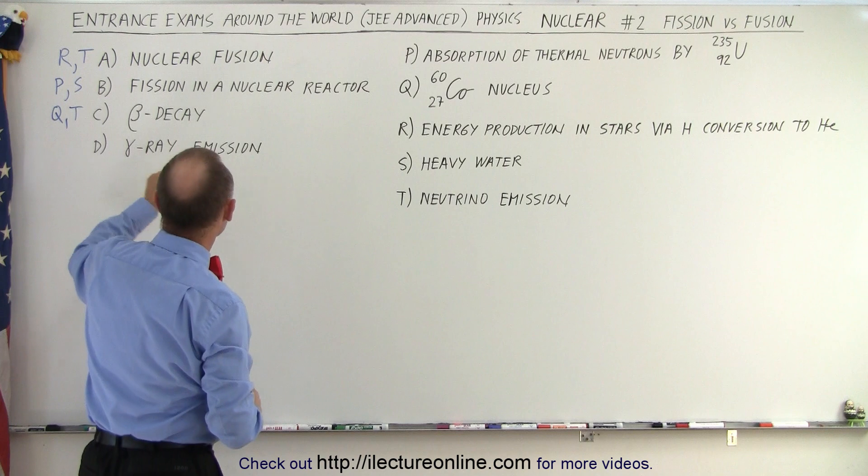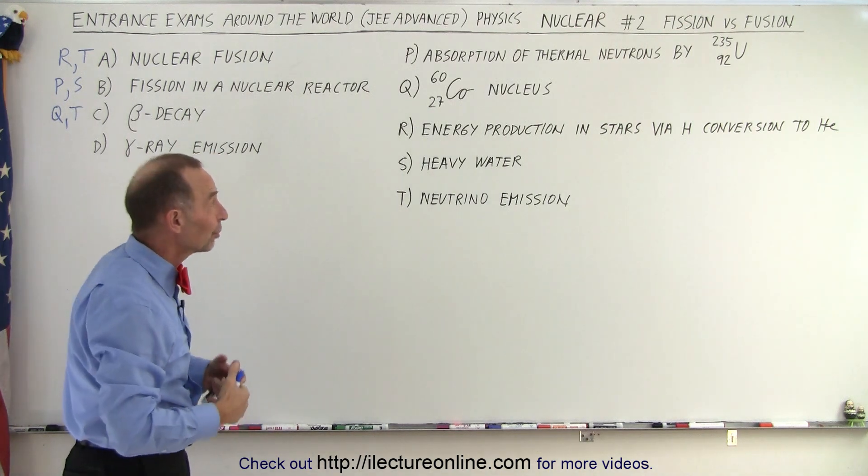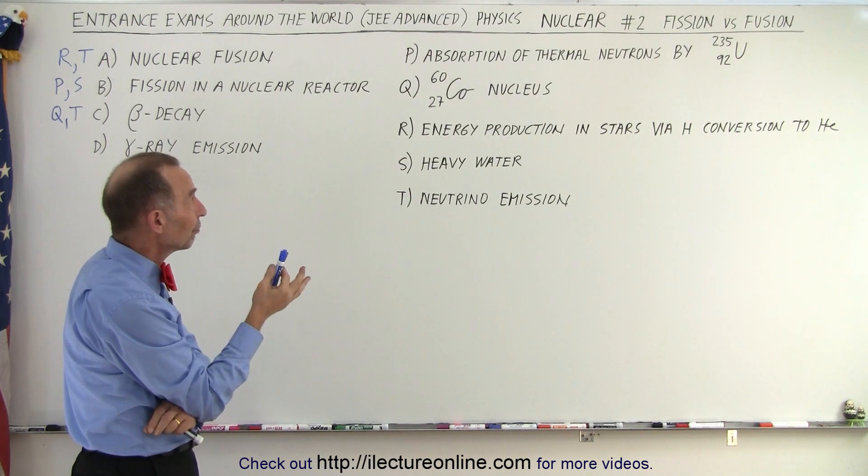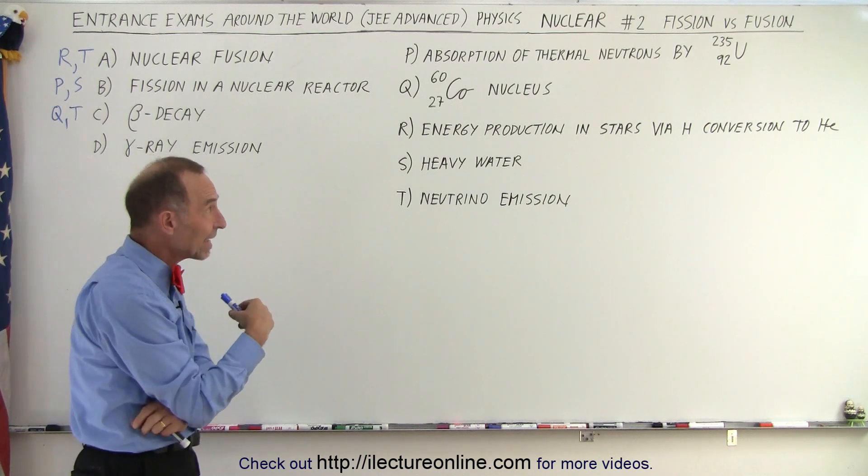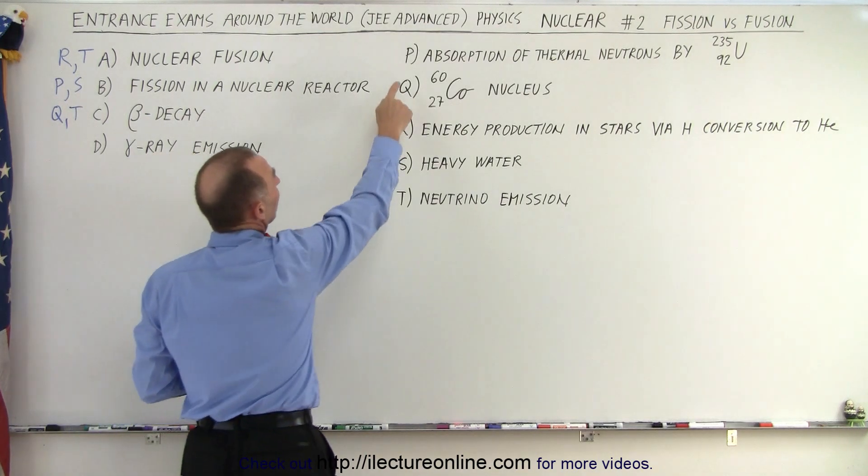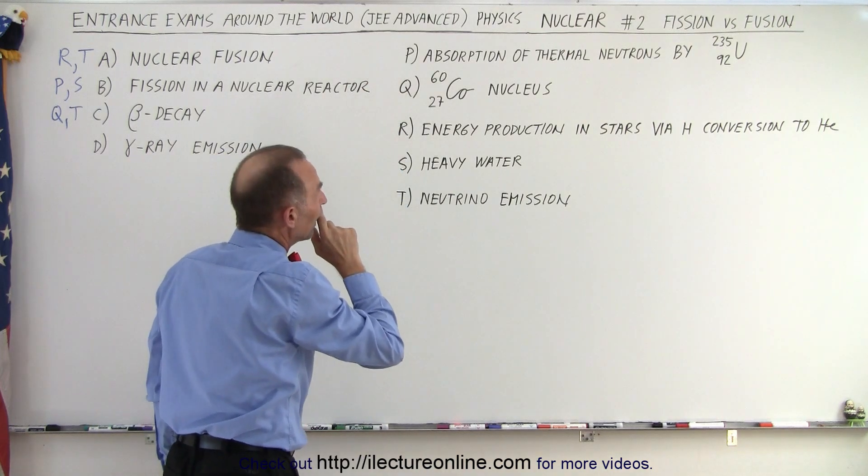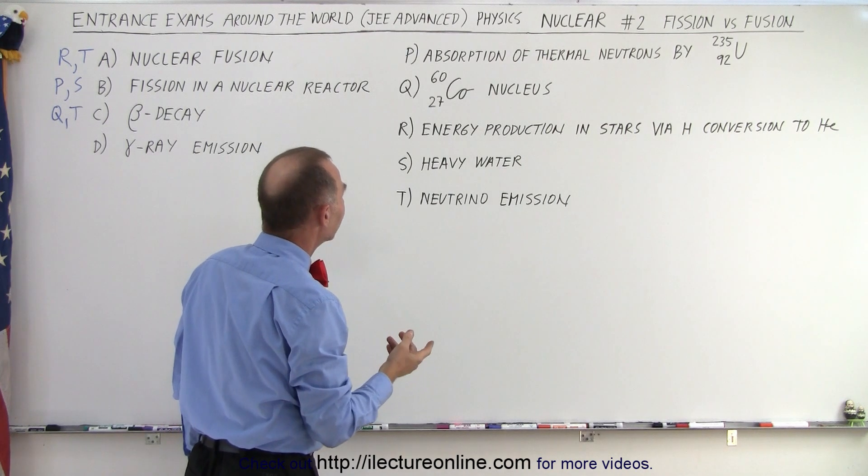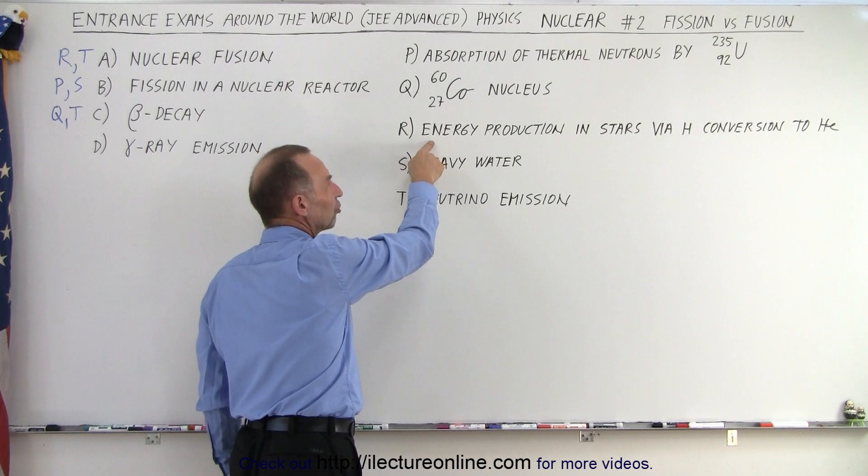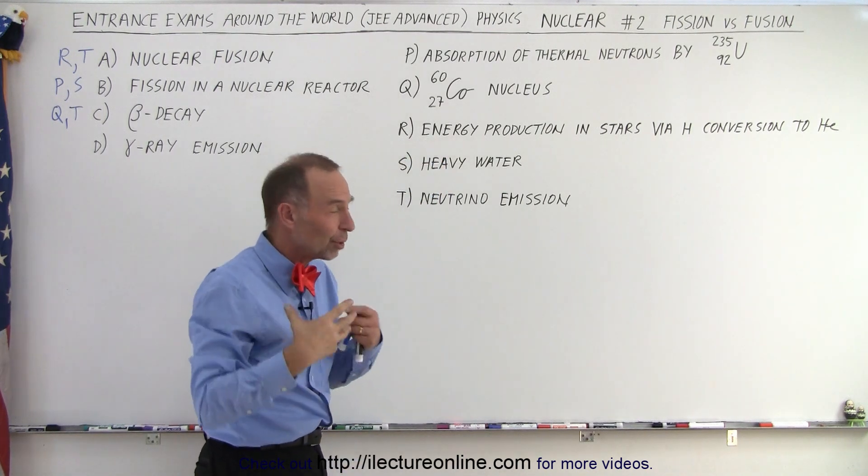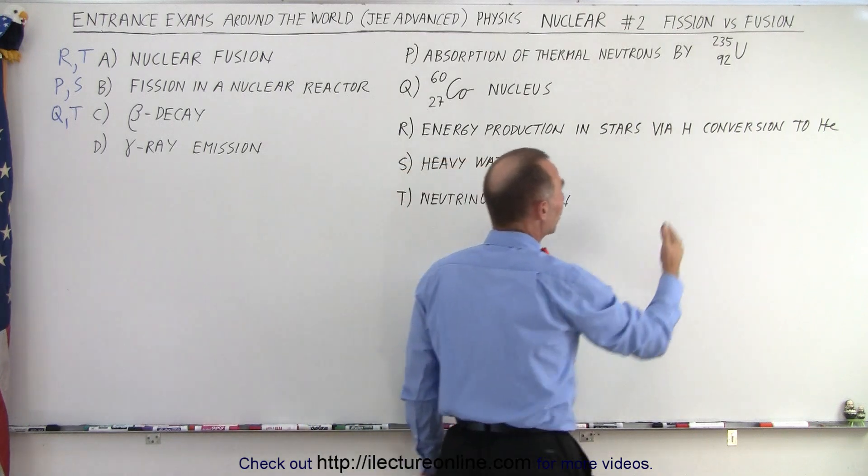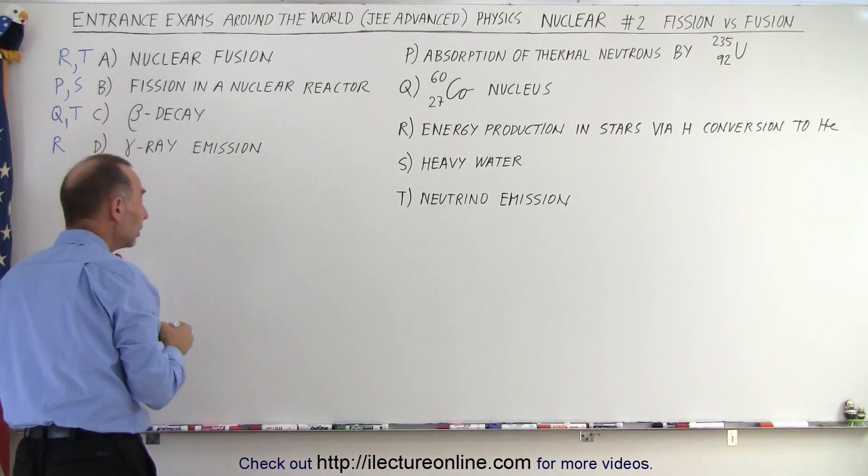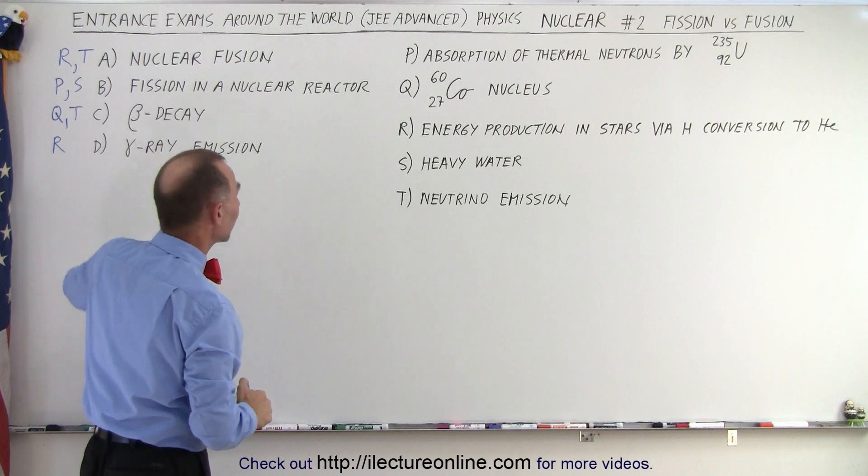And finally, gamma ray emission. Now, gamma rays are not very common production of something. Could we have gamma ray emission from the absorption of thermal neutrons by uranium-235? The answer is yes. It definitely could be absorption of thermal neutrons. Although, we don't typically associate gamma ray emission by that. It's much more likely to assume that this happens in the energy production in stars via hydrogen conversion to helium. That's where an enormous amount of energy is converted to when we go from hydrogen to helium in the fusion reaction. And so therefore, I would say that R is probably the only correct statement there associated with gamma ray emission.